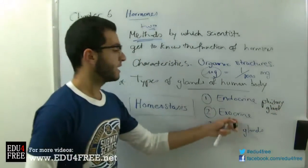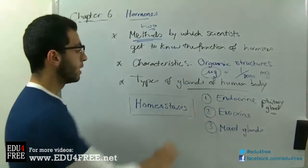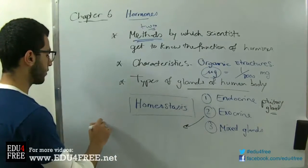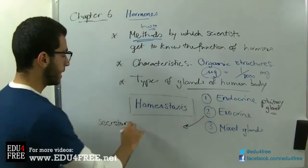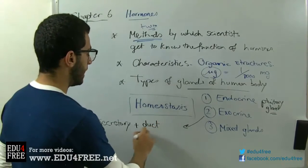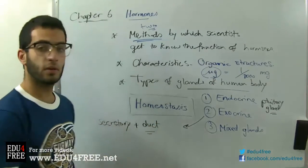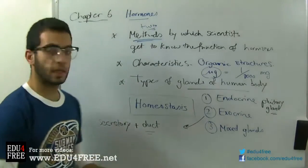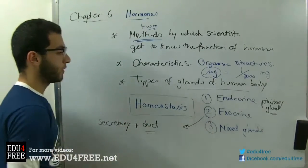We have exocrine glands — exocrine glands are glands that have ducts. So they are composed of two parts: we have a secretory part, the part that makes the secretions, plus a duct or a bundle or group of ducts that carry the secretion to the organ that's supposed to receive it. There are two types of exocrine glands.